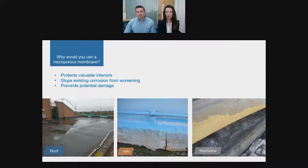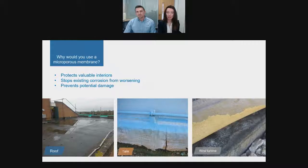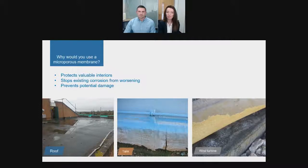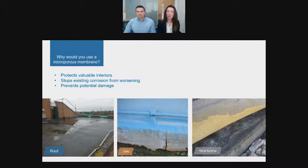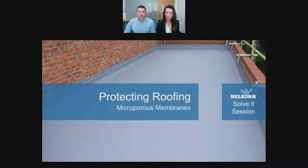Now that we've established the qualities of a microporous membrane, we want to look at why people are increasingly choosing this technology, where the main places they're used are, and how they help to seal and prevent leaks. Firstly, by using a microporous membrane you are protecting an interior from leaks — whether that's protecting people, electrical equipment, or other assets. If a structure is already experiencing corrosion, membranes cut off the water supply and allow any remaining vapor to escape.